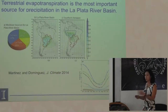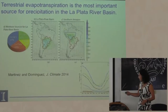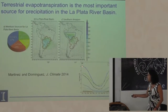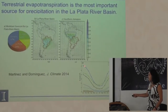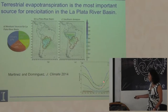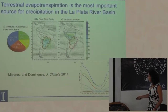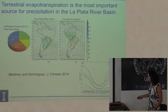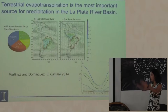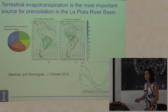Lo que estoy mostrando aquí es el ciclo de temporadas. Son 33 años agregados para obtener el ciclo climatológico. La precipitación tiene un pico en diciembre y enero; en la temporada seca, junio y julio. Lo verde es la evapotranspiración y lo negro es el total de todas las regiones terrestres. Aquí pueden ver todas las subregiones donde calculamos cuánto contribuye a la precipitación sobre la cuenca La Plata.